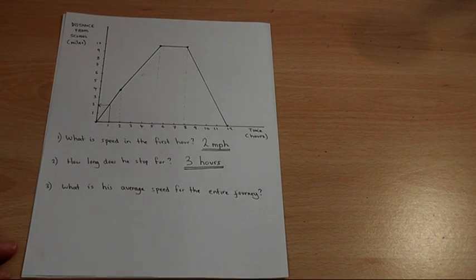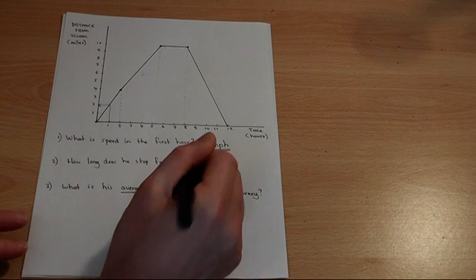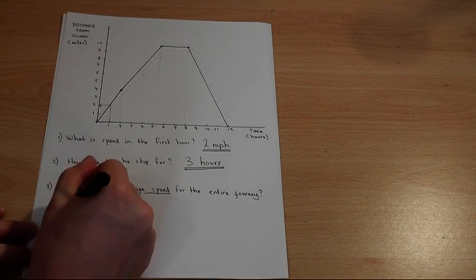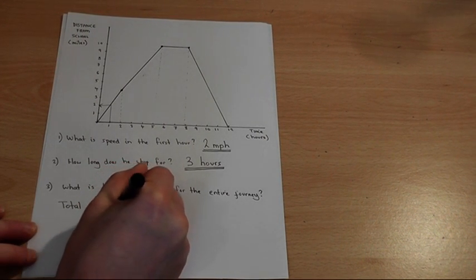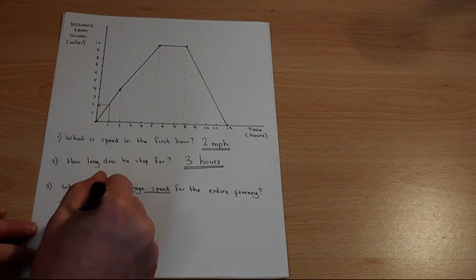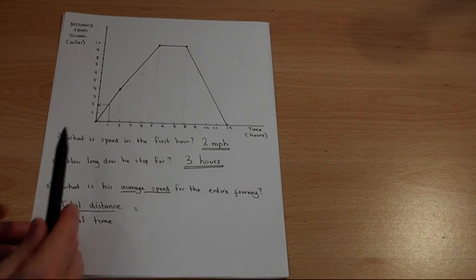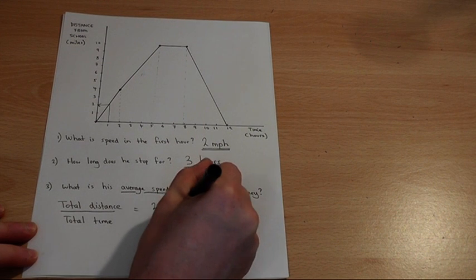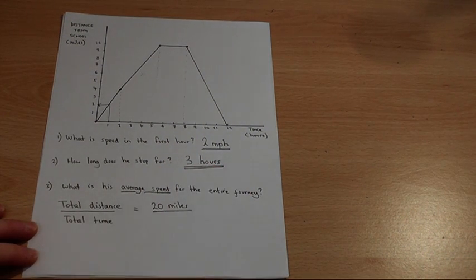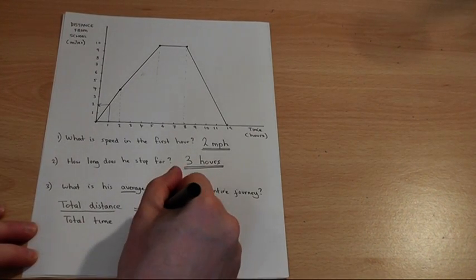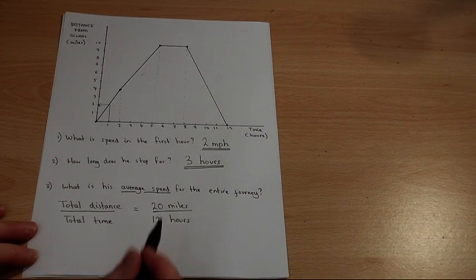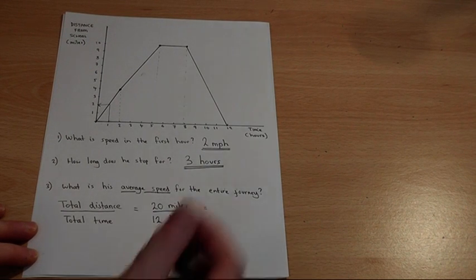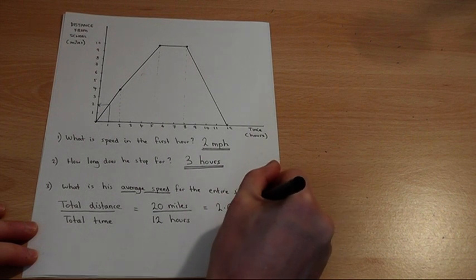The final question says, what is his average speed for the entire journey? Average speed is a simple thing to work out. It is total distance divided by total time. He travels ten miles away from school and ten miles back so he travels twenty miles. But including all his stops and rests, he travels for twelve hours in total. So his average speed is twenty divided by twelve, which can be written as either a fraction or a decimal, but it is 2.67 miles per hour.